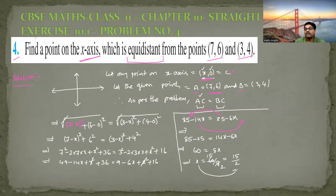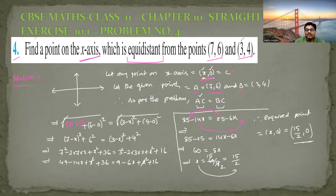Don't stop after finding the x value — our work is not over. Therefore the required point equals x comma 0, and substituting x as 15 by 2, the point is (15/2, 0). This is the point which is equally away from (7, 6) and (3, 4). I hope this video is helpful to you. Please subscribe to my channel and don't forget to share it with whoever needs these videos. We will meet again in the next video. Until then, take care. Thank you.